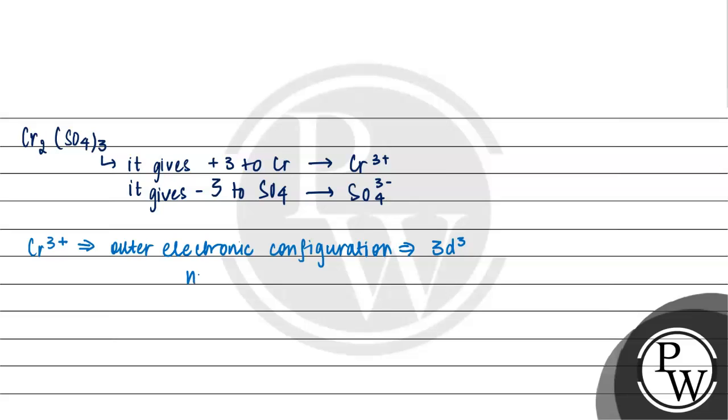The number of unpaired electrons here is 3. So if the number of unpaired electrons is more than 0, it will show color due to d-d transition.